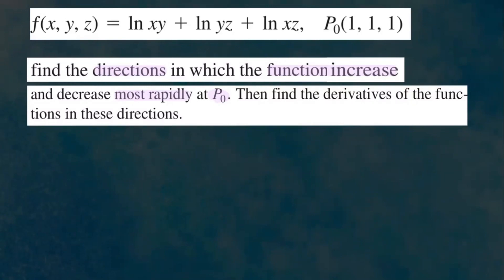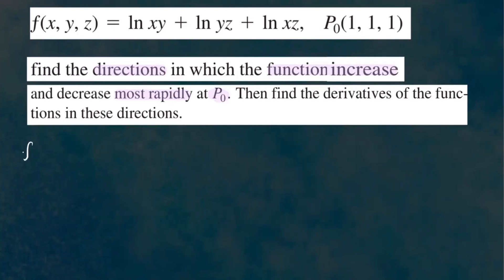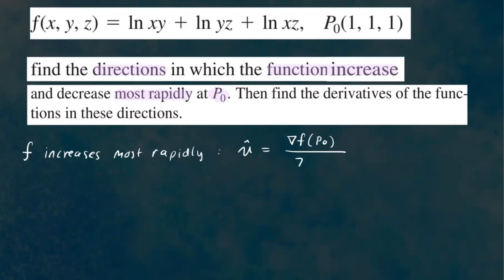We're going to make that gradient vector a unit vector. So we're going to say that this function f increases most rapidly in the direction of the gradient vector, and we'll call that a unit vector û, which will be the gradient of f at point P0 divided by its magnitude. That's how you make a vector a unit vector, and this vector will give the greatest increase of the function.